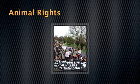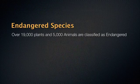Conservation of biodiversity is a very big issue, and there are many people that protest for animal rights. You change one species, you affect other populations, and that can have devastating effects. We know that over 19,000 plants and 5,000 animals are classified as endangered — and that's actually an old figure; the current number is likely higher.